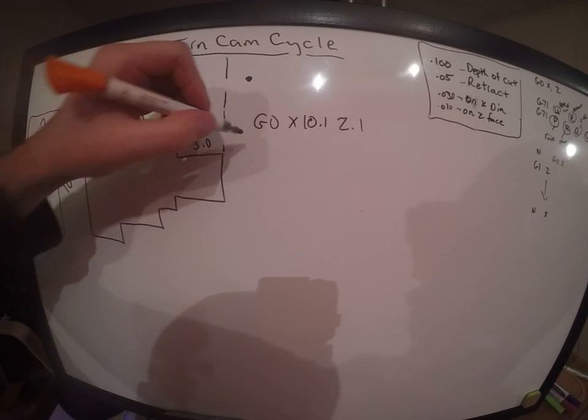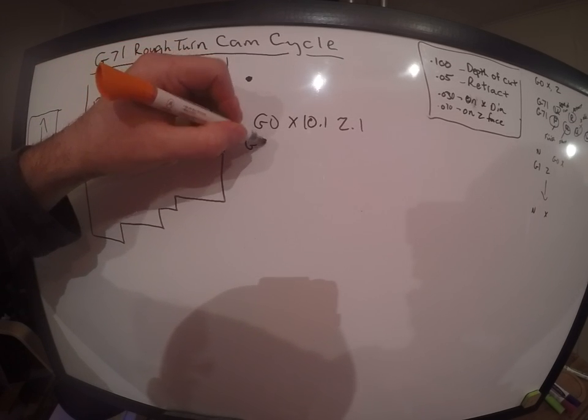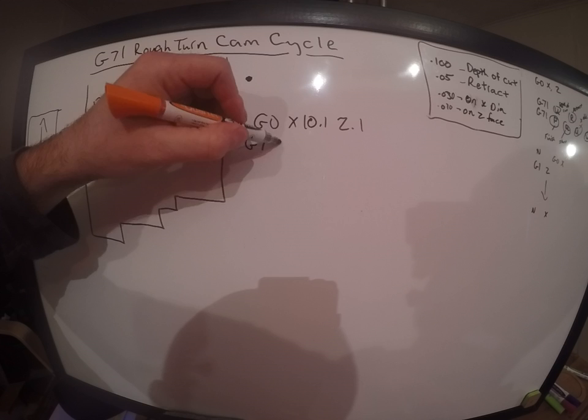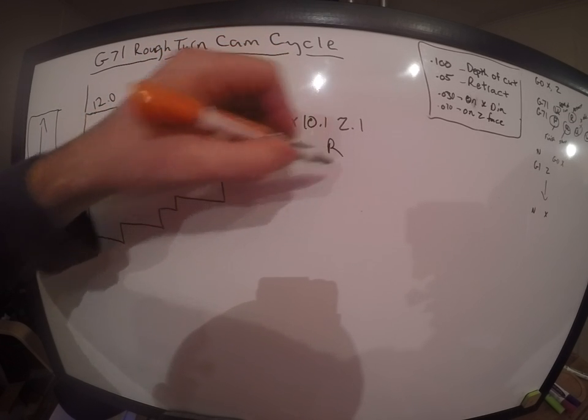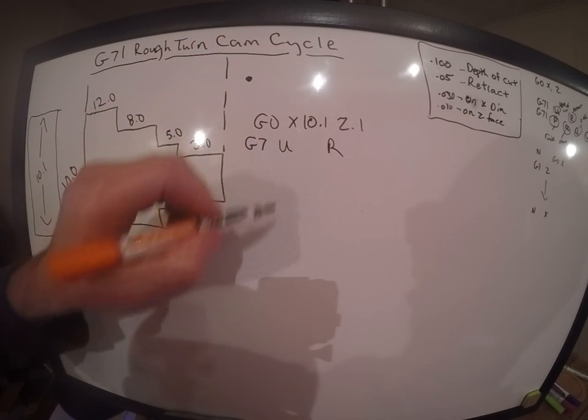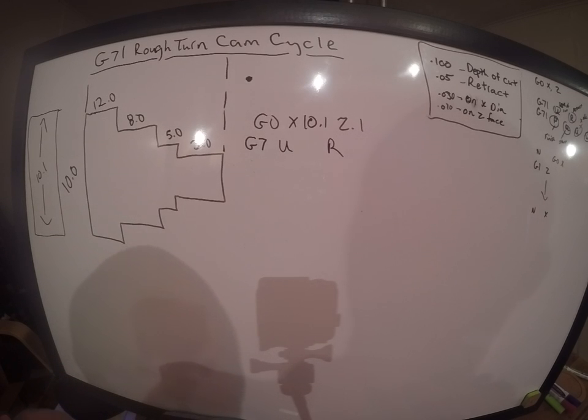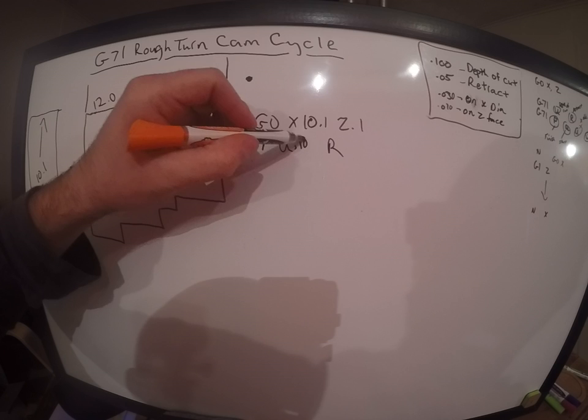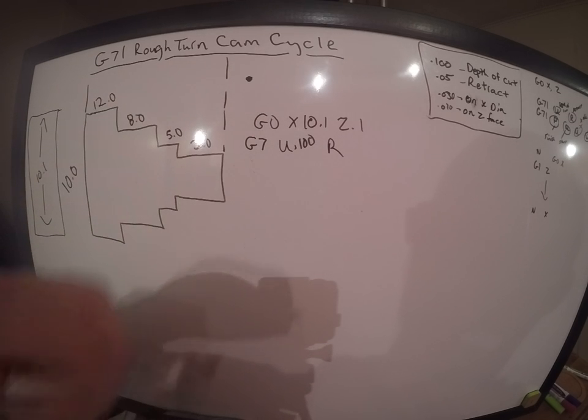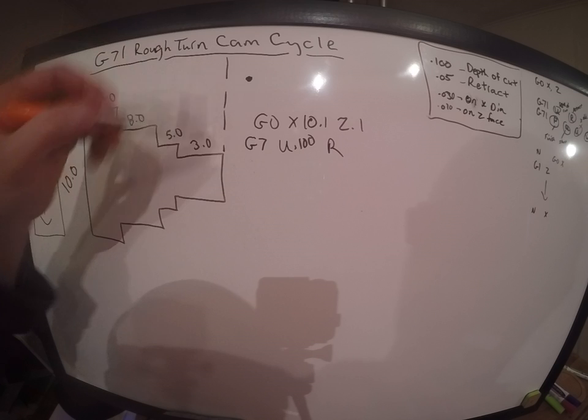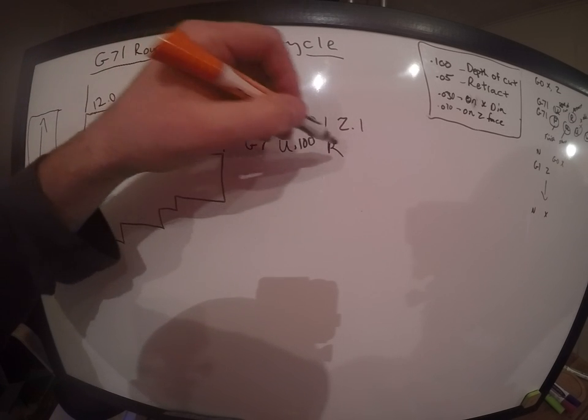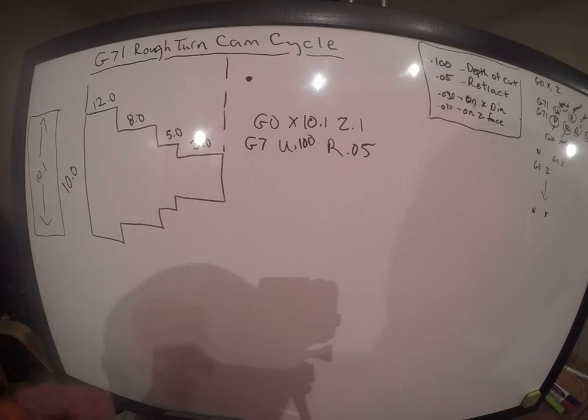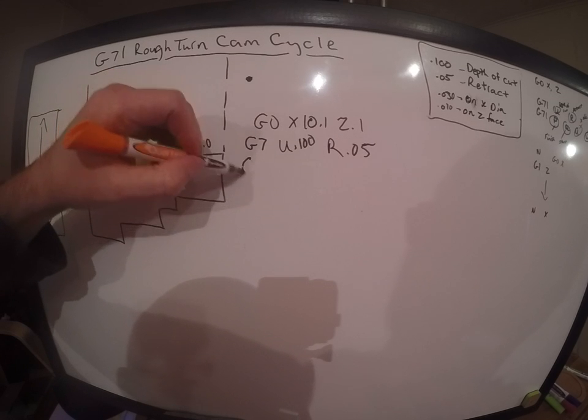Now we're going to start our cam cycle. So we're going to plug these numbers in: G71, U, and R. I want to explain what these are. The U is your depth of cut. Depending on your insert, we're going to use an insert that can easily take 100 thousandths. So we're going to say 100 thousandths on our depth of cut. And the R is the retract, how much it's going to retract after each cut. We're just going to throw in 50 thousandths.